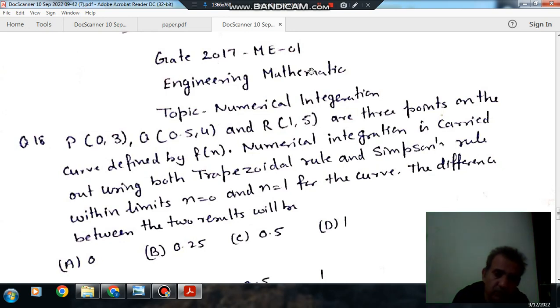Hello, welcome again. We are solving some questions of engineering mathematics. The topic is numerical integration, question number 18 from GATE 2017 ME-01. Points P(0,3), Q(0.5,4), and R(1,5) are three points on a curve defined by f(x). The numerical integration...